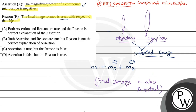We can see from the ray diagram that the object sends light rays, and both lenses form inverted images, so the magnifying power is negative. The magnifying power of the compound microscope is the product of the objective and the eyepiece. Since both images are inverted, the assertion is right, but the reason is false because the final image is also inverted with respect to the object.